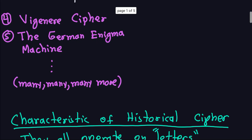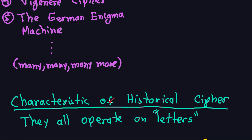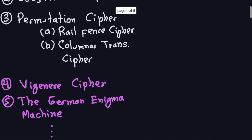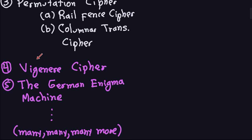One of the important characteristics of these historical ciphers is that they all operate on letters. For the Caesar cipher, we have a message in letters, encrypt it using a shift, and get a ciphertext. Same thing for the substitution cipher — done on letters — and same for the permutation in the two cases of the rail fence and columnar transposition. The Enigma machine and pretty much all other historical ciphers work on letters.